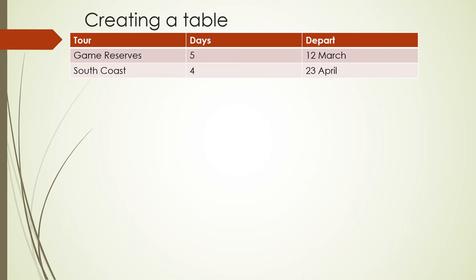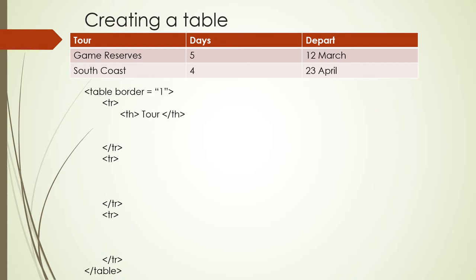Let's have a look at an example. If this is the table we wanted to create — a table with three rows, the first row being the headings — the first step is to open and close your table tag. You then open and close a table row for each of the three rows. The first row contains our three headings: Tour, Days, and Depart. So you open a table heading for Tour, one for Days, and one for Depart, all in the first row.